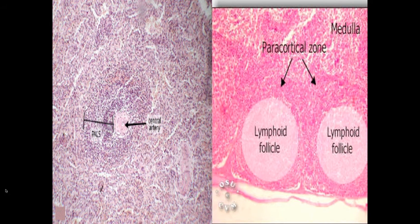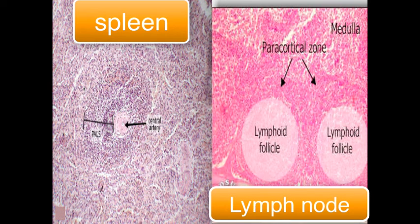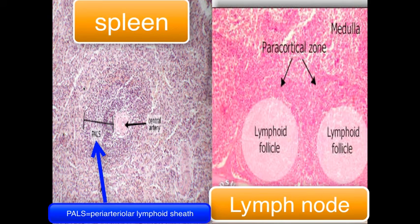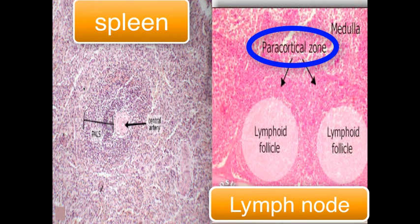So where are your T cells located? They are found essentially in three major tissues. In the beginning you find many of them in your thymus, but later on primarily in two areas: PALS — standing for peri-arterial lymphoid sheath — which is an area surrounding the central artery; and in your lymph nodes, close to your lymphoid follicles, in an area called the paracortical zone.